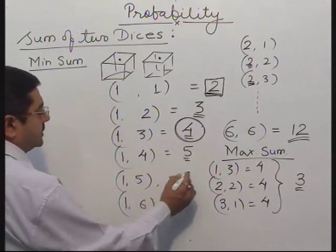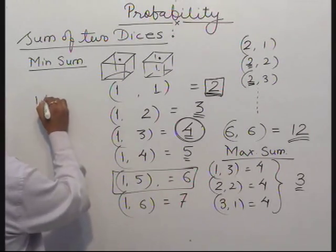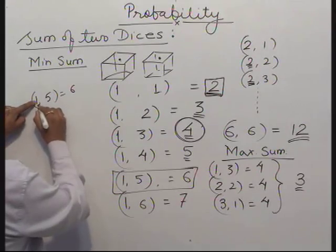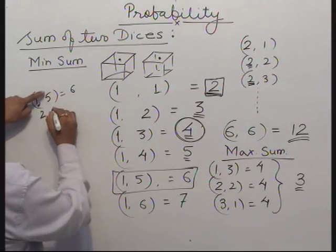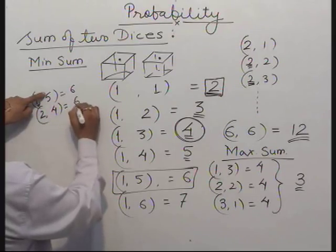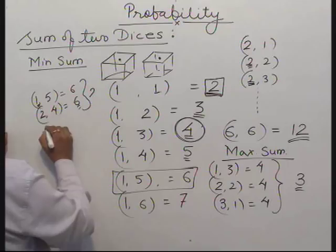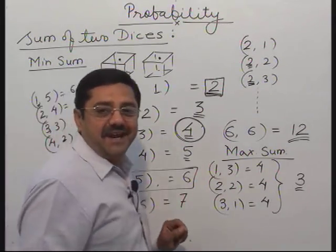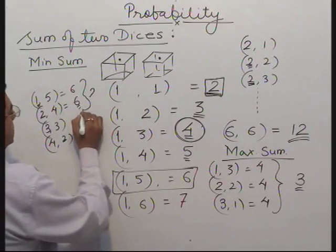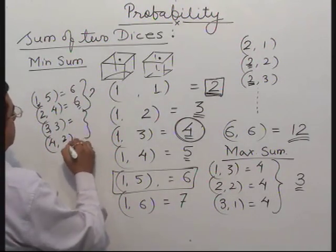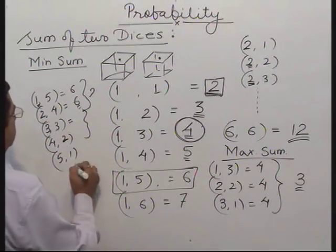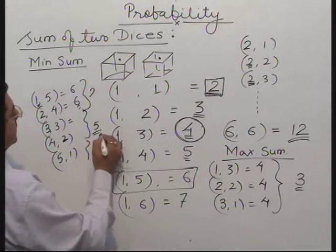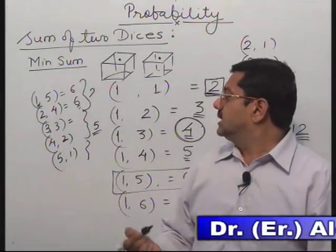What is the probability of getting sum 6? We have (1,5) giving 6. Then (2,4) gives 6. Then (3,3) also gives 6. Then (4,2) gives 6. Then (5,1) gives 6. Total 5 cases of getting a sum of 6.